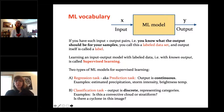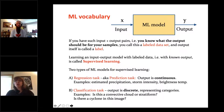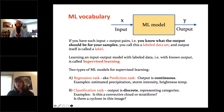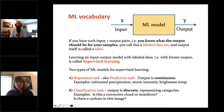If you have input-output pairs and you know what the output should be for your samples, you call this a labeled dataset, and the output itself is called a label. Whenever you have these pairs, you call this supervised learning — you're supervising the algorithm by telling it what the correct answer should be, so you can always measure your error at the output. The great majority of our time will be spent on supervised learning.